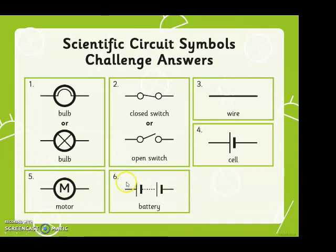Number six, the battery. Remember, it's shown as two cells with dots in between. Number seven is the buzzer. And these are the symbols you should be using if you draw a circuit using scientific notation.